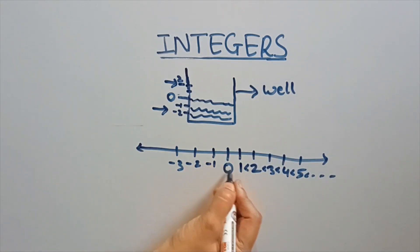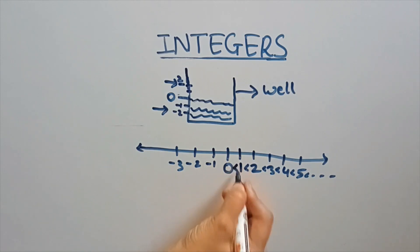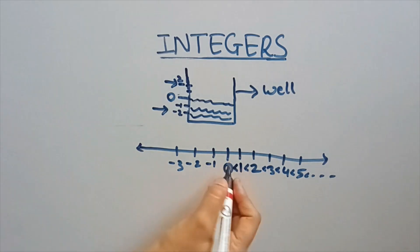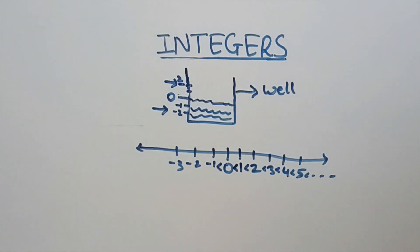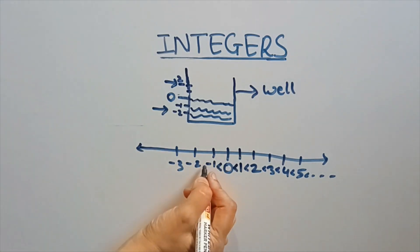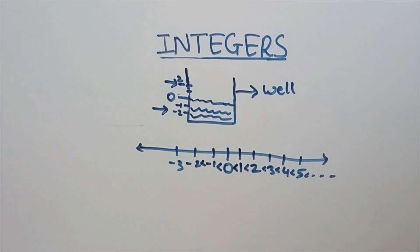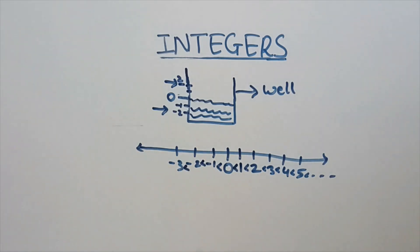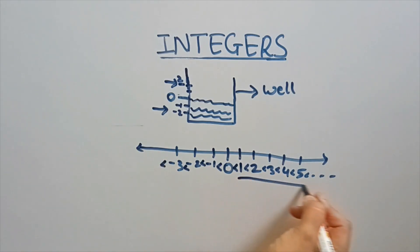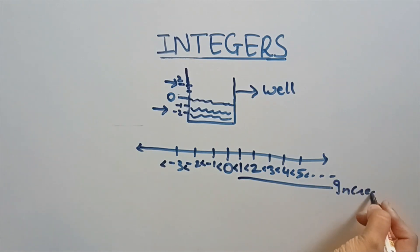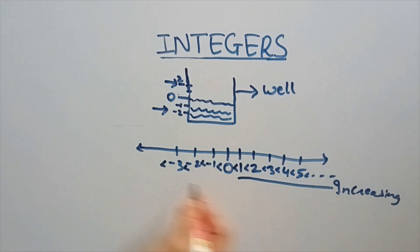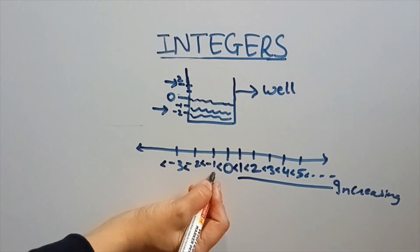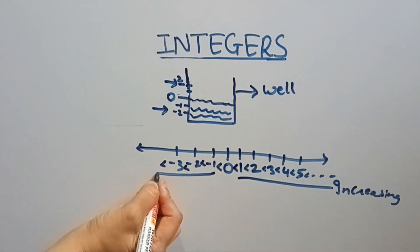Here, 0 is greater than minus 1, minus 1 is greater than minus 2, minus 2 is greater than minus 3, and so on. So on the right-hand side numbers are increasing, and on the left-hand side as you go further, numbers will decrease.